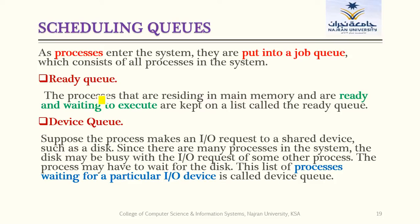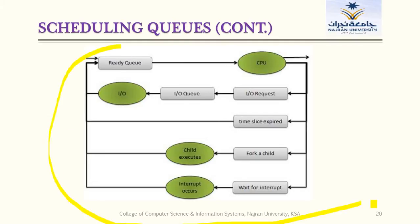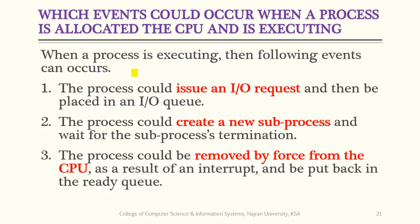We also discussed scheduling queues: the ready queue for processes in the ready state, and the device queue for processes in the waiting state. We also discussed what happens when a process creates a child process — three possibilities: the process could issue an I/O request and be placed in the I/O queue, create a new subprocess and wait for process termination, or be removed by force from the CPU.